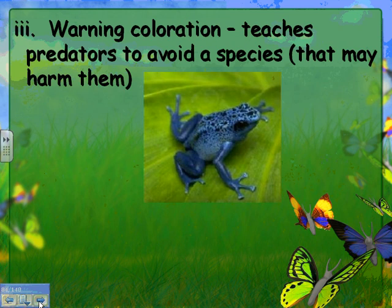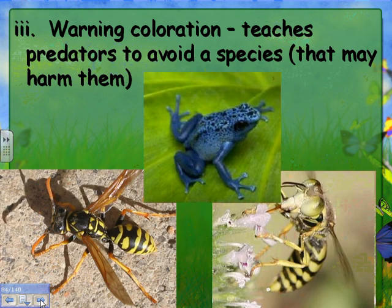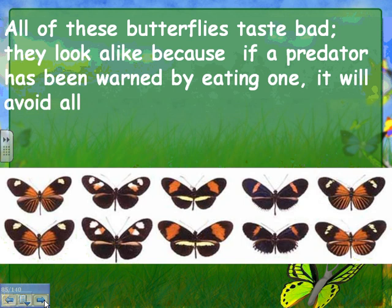Warning coloration teaches predators to avoid a species — for example, this is a poisonous frog that advertises its toxicity with bright colors. Some wasps use yellow and black coloration to warn predators they sting, and other species mimic that coloration even though they can't sting, gaining protection. Similarly, butterflies that taste bad all look alike — if a predator has been warned by eating one, it will avoid all the others, which absolutely drives the evolution of these butterflies.